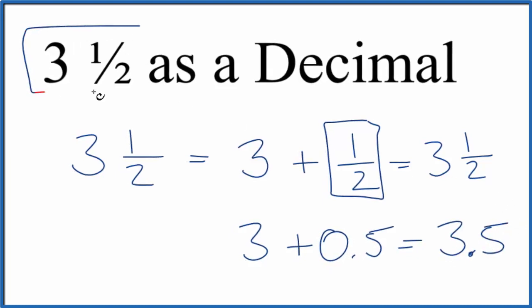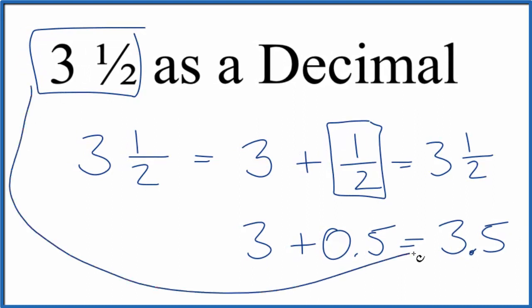So once again, 3 and 1 half as a decimal, that's going to be 3.5. So either one of those ways works, and you can check your work with a calculator if you want to be sure.